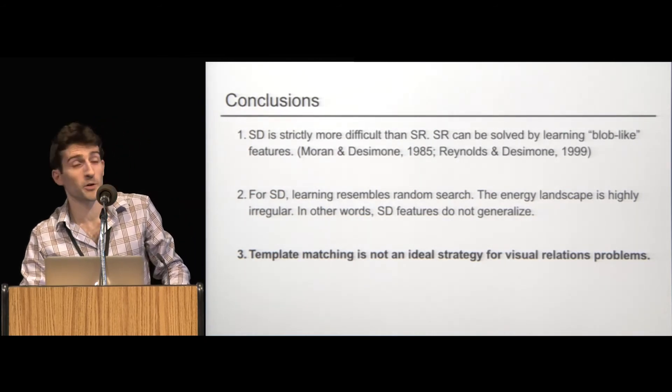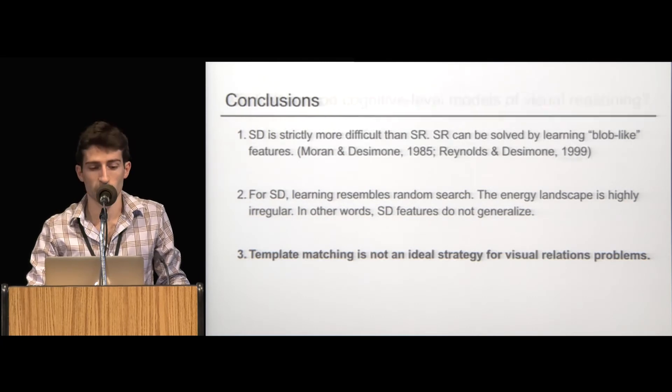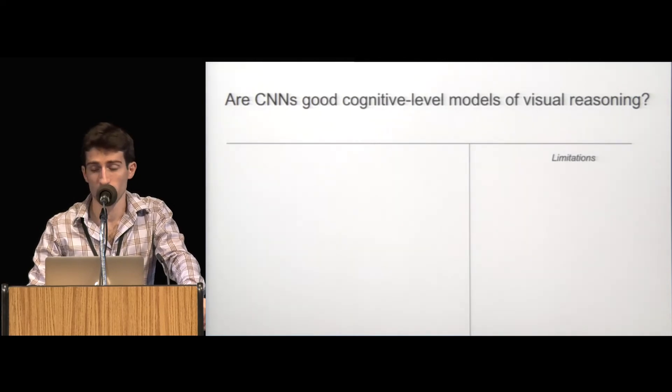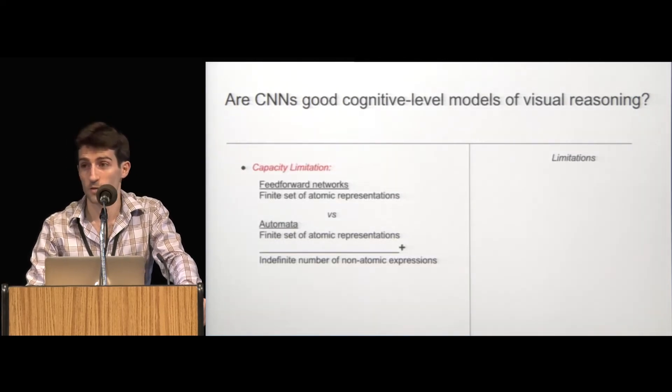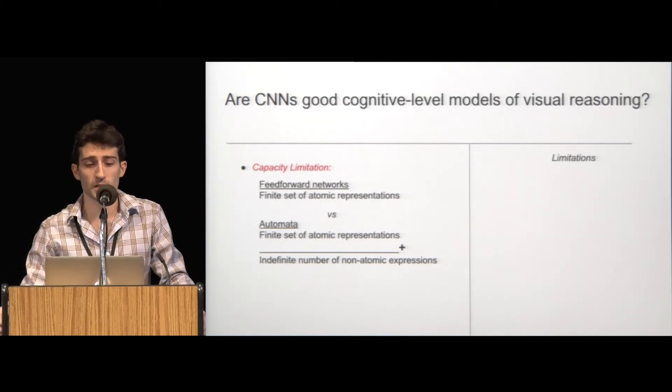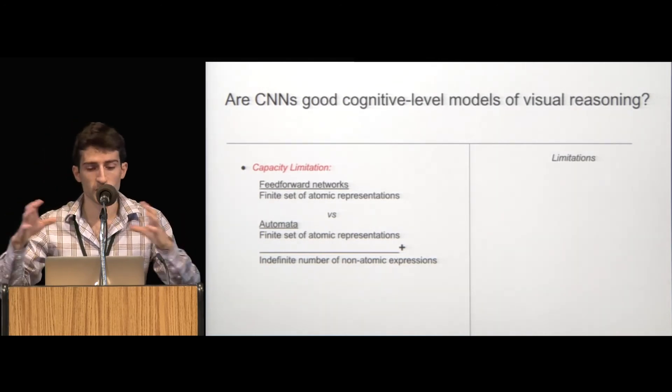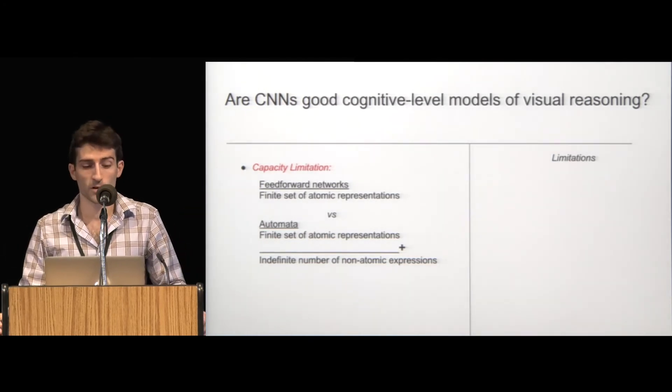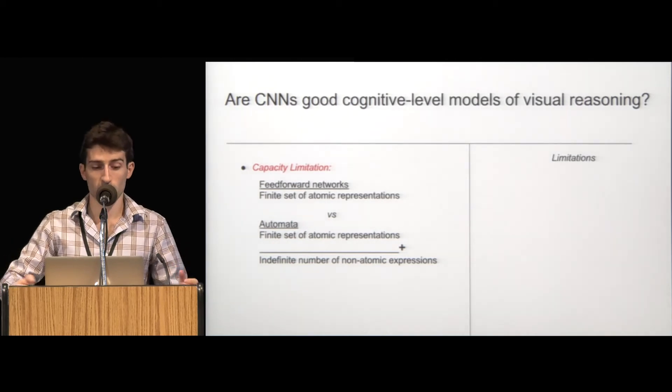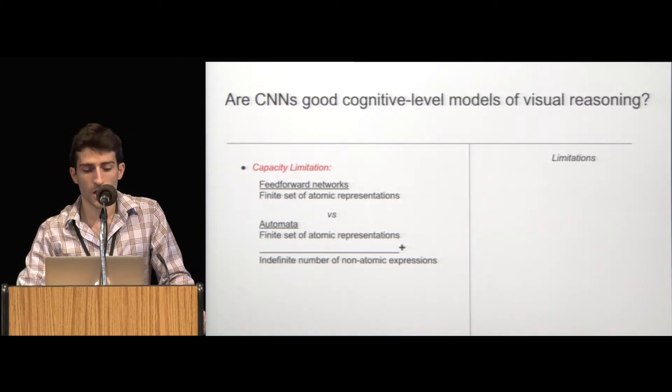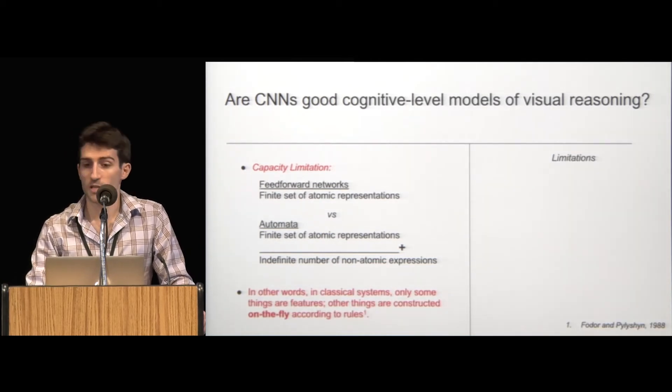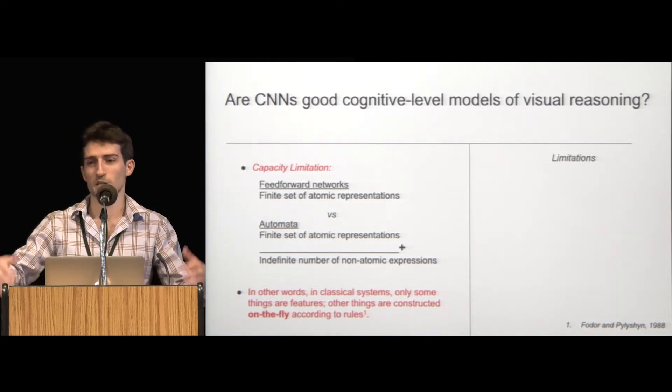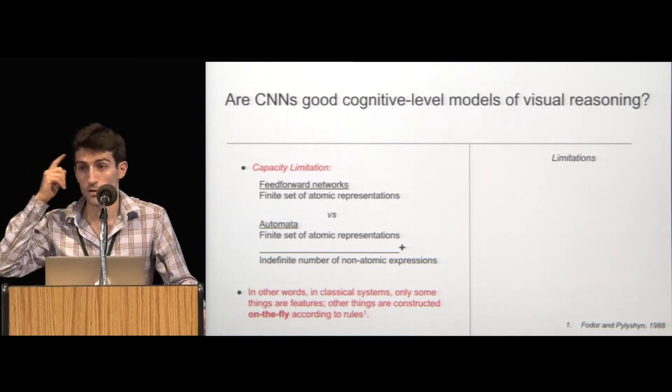So, if we were going to get political, we would say that template matching is just not an ideal strategy for visual relations problems. But we can get even more political when we say, are CNNs good cognitive-level models of visual reasoning? And in our opinion, obviously not. So, there's a capacity limitation, which we've been alluding to. So, in feed-forward networks like CNNs, everything it has to learn is stored in the form of these, in a finite set of kind of atomic representations, which we call features, compared to classical, more symbolic systems like automata, that combine a finite set of atomic representations with an indefinite number of non-atomic expressions. In other words, in classical systems, only some things are features and other things are constructed on the fly according to rules. There's a lot to be said here about levels of analysis and the Turing equivalency of RNNs and things like that. But still, your Fodor and Pylyshyn bells should be ringing. So, there's no non-atomic representations.